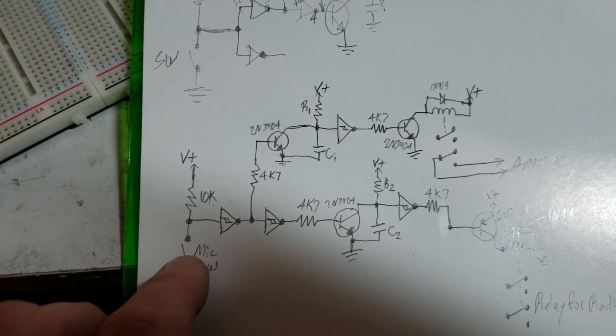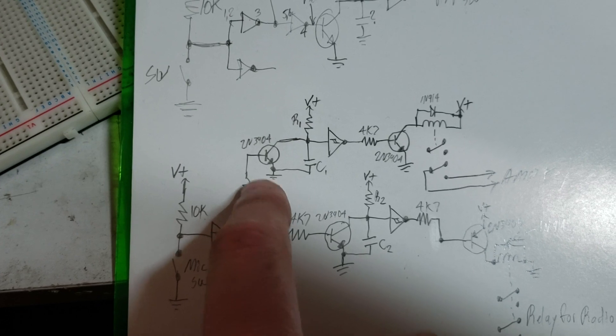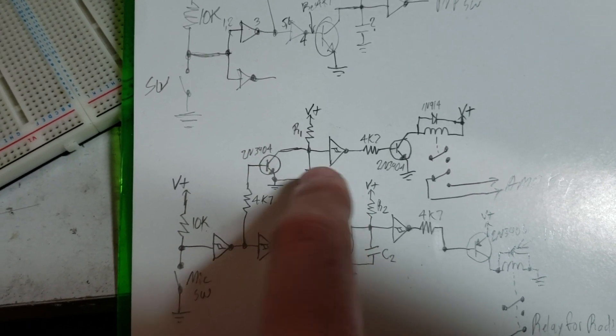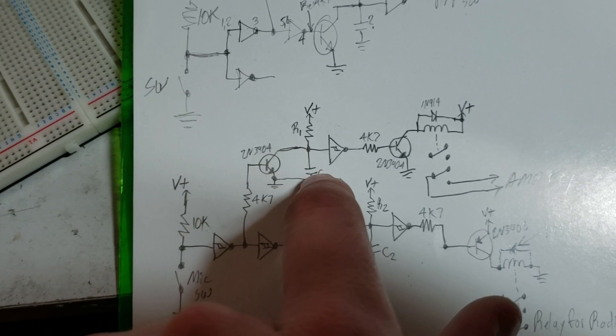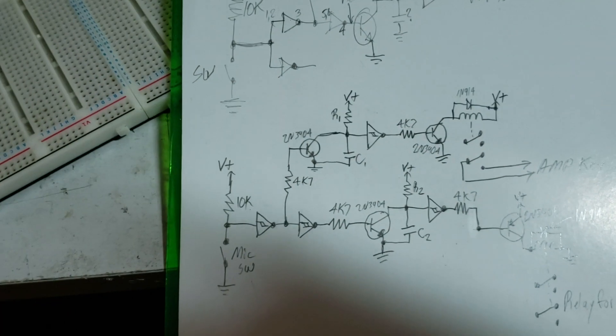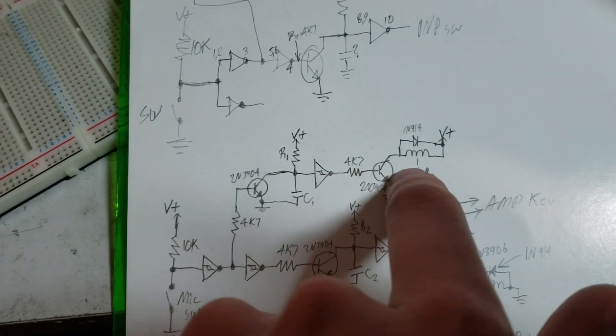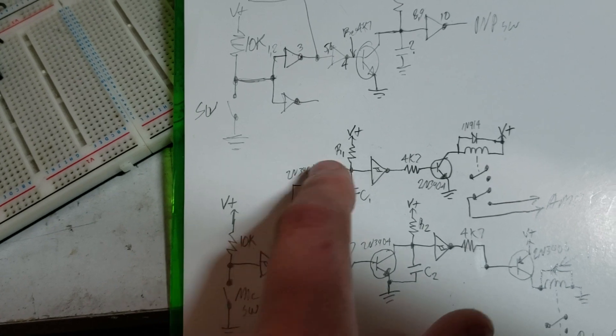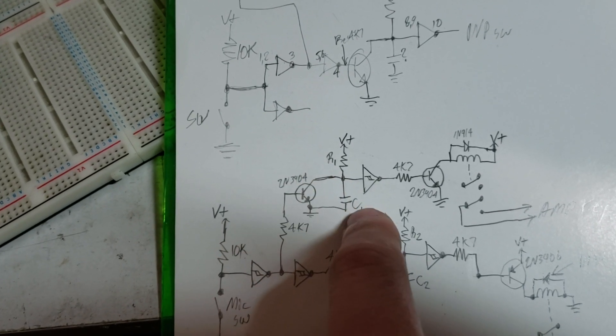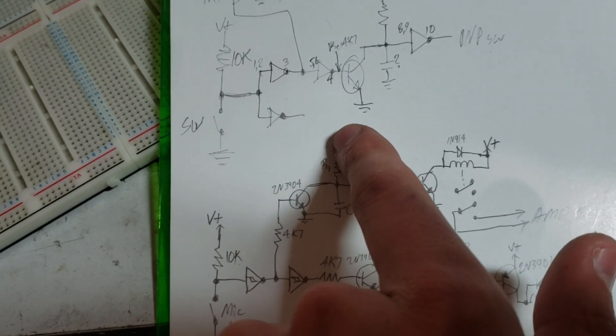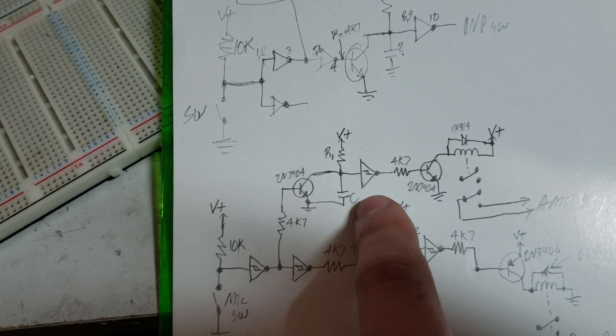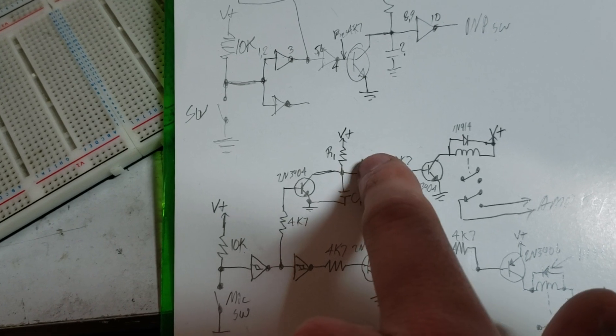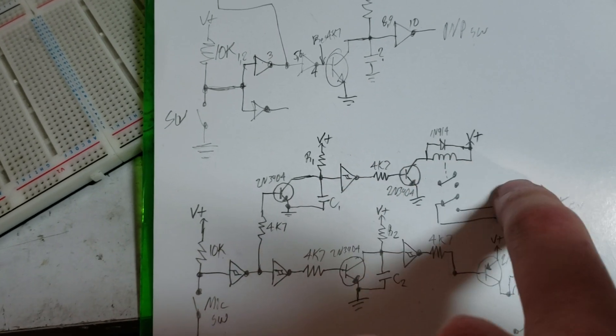So basically what happens is when we key the mic, our signal comes up in here and it immediately pulls this capacitor to ground. So when we turn on the mic, this transistor pulls this capacitor to ground very quickly. And that goes through our buffer and turns on our amp keying relay. Now when we release the mic switch, this transistor stops pulling the capacitor to ground and that capacitor slowly recharges through this resistor. Now the value of this resistor and capacitor determines how quickly it charges and how quickly this gate resets and turns off the amp.